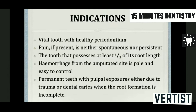The indications are: a vital tooth with a healthy periodontium; pain, if present, is neither spontaneous nor persistent — these indicate reversibility of the condition; the tooth possesses at least two-thirds of the root length; hemorrhage from the amputated site is controllable; and permanent teeth with pulpal exposures either due to trauma or dental caries when root formation is incomplete, that is, immature permanent teeth.